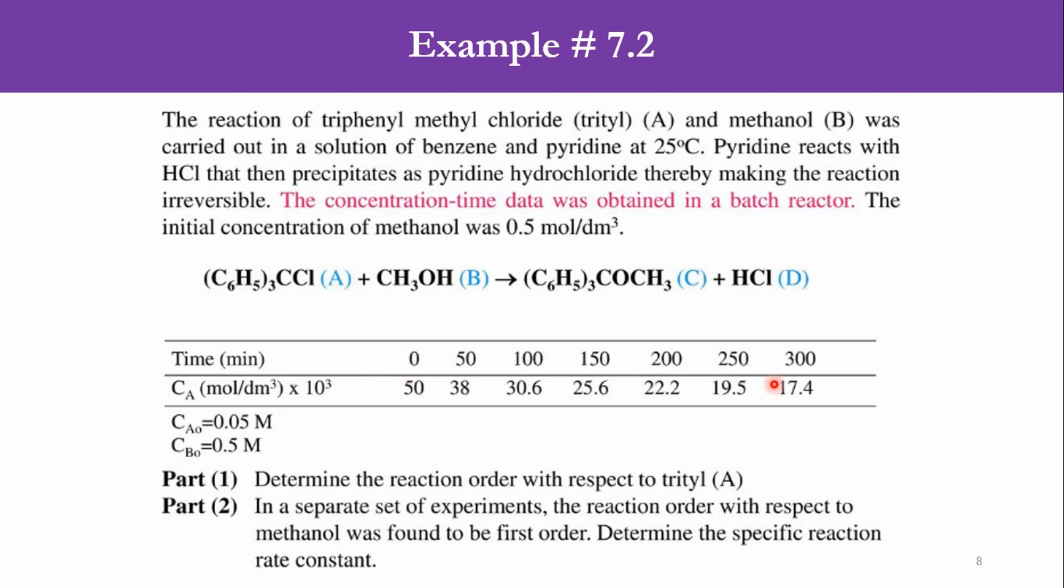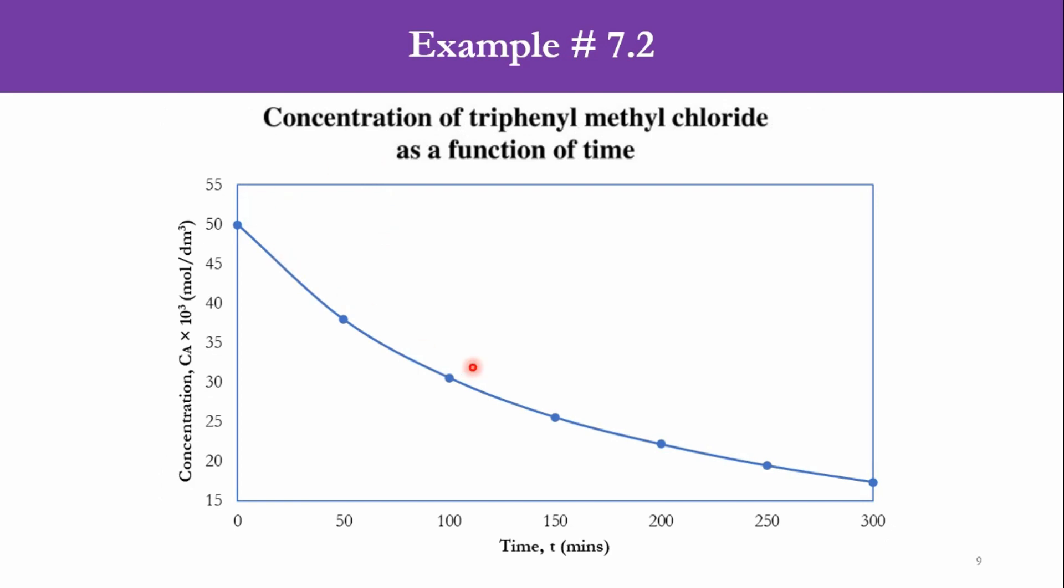This is the overall description given to us here. One thing which is to be clearly noted here is that it is CA into 10^-3: 50, 38, 30.6, 25.6 and so on. So if we had to calculate CA we have to divide all these values by 1000, and the time interval is same of 50 minutes. Then we had seen the plot which is representing the concentration of A decreasing with time as the reaction is proceeding in the system.